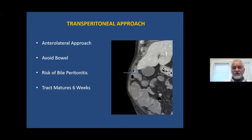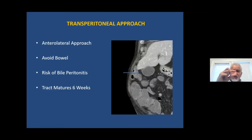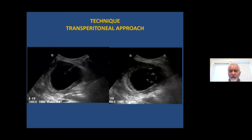Eventually, you have to take the catheter out of the gallbladder so that further management can happen, and you have to wait for the tract to mature. For example, the part of the catheter passing between the gallbladder and the skin — that tract needs to close. Otherwise, leakage of bile can occur.